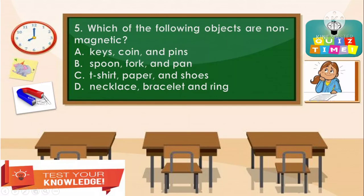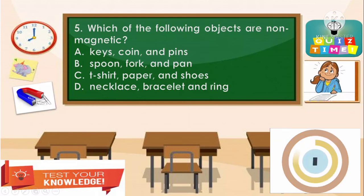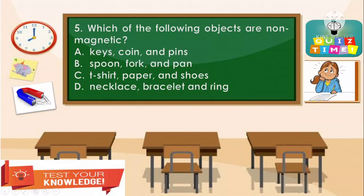Item number 5: Which of the following objects are non-magnetic? A. Keys, coins, and pins. B. Spoon, fork, and pan. C. T-shirt, paper, and shoes. D. Necklace, bracelet, and ring. The correct answer is letter C — T-shirt, paper, and shoes.